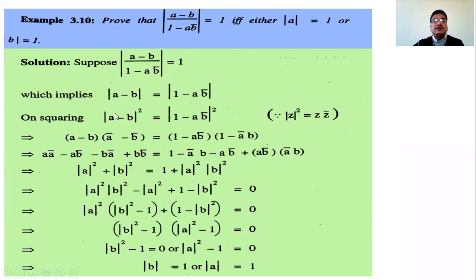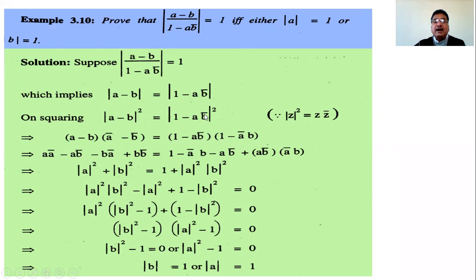Separate the modulus: |a - b| / |1 - ab̄| = 1, so shift |1 - ab̄| to the right-hand side, giving |a - b| = |1 - ab̄|. Squaring both sides and using |Z|² = Z·Z̄: (a - b)(a - b)̄ = (1 - ab̄)(1 - ab̄)̄. The conjugate of (1 - ab̄) is 1 - āb̄̄ = 1 - āb.